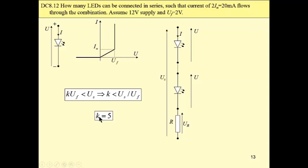Which means that the integer which is the closest one to 6 and less than 6 is 5. This is our answer. Five diodes can be connected if we have 12 volt supply and these design specifications: 20 milliamp and 2 volt drop across each diode.